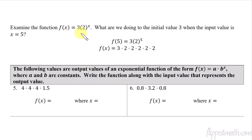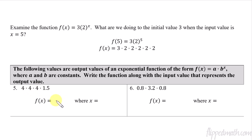Next, we examine a · 3 · 2^x. If we input x = 5, that means there are five twos: three times two times two times two times two times two. Now going the other direction — if I have 4 × 4 × 4 × 1.5, I recognize 1.5 is the initial value and four is the base repeated three times. So the function is 1.5 · 4^x with x = 3.